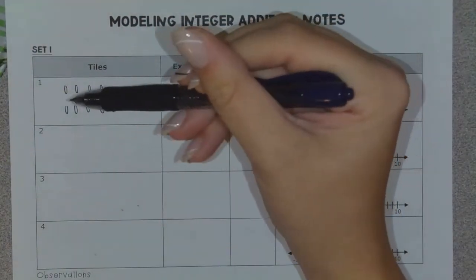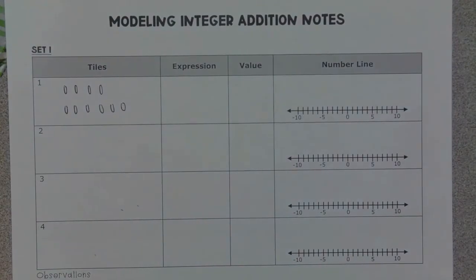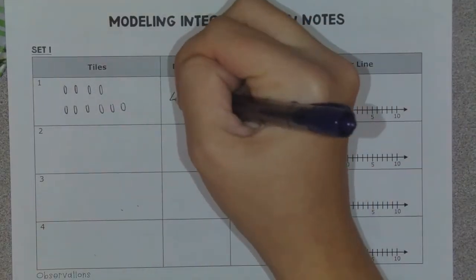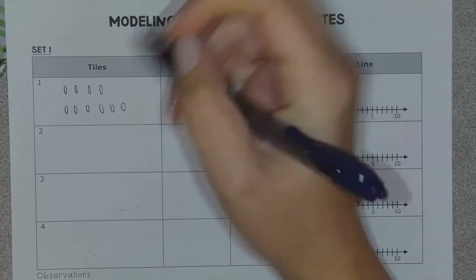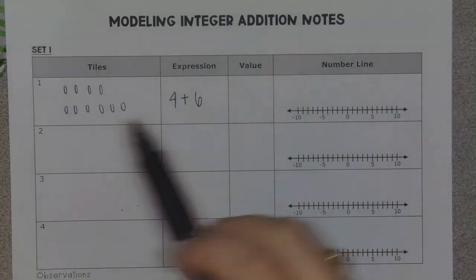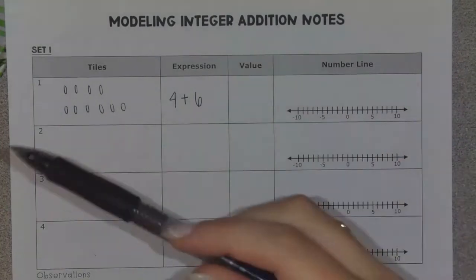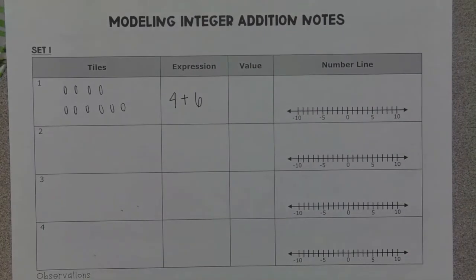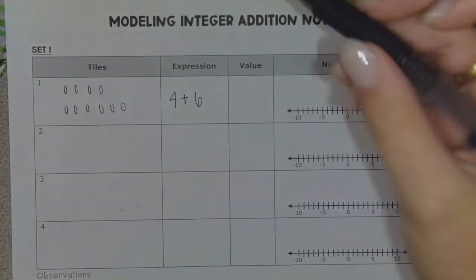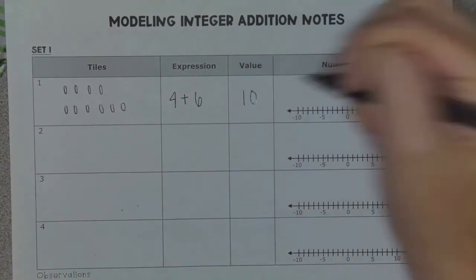I always want to start with the first number on the top, second number on the bottom. So here are my tiles. Now I need to write an expression from those tiles. This expression would be positive four, or just four, plus positive six, or six — so four plus six. For the value, I just need to count how many tiles there are because I don't have any negatives to create zero pairs with. So four plus six gives me a value of 10.